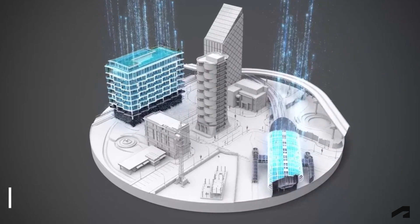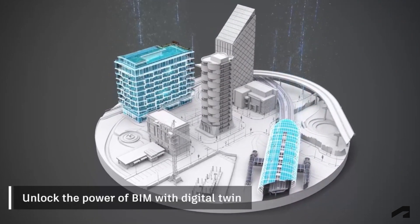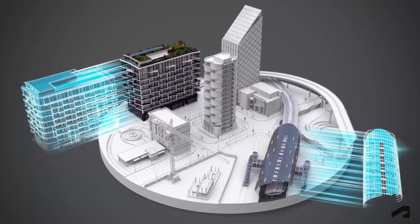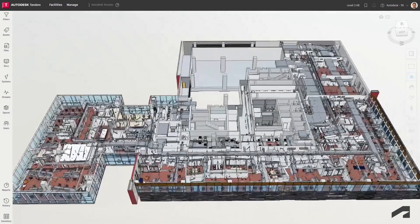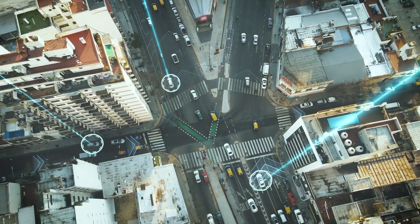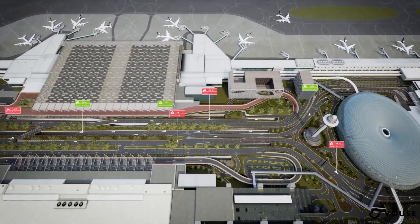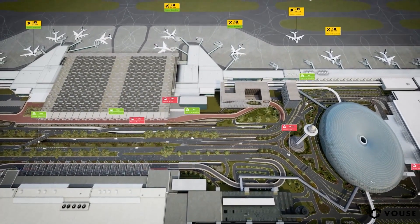They go beyond a simple 3D model, map or enticing puzzle heads. A digital twin, in simple terms, is a near real-time virtual representation of a real-world asset or system. Architects and designers can already build complex 3D models, but digital twins allow the ability to create simulations with near-live data feeds. Unlike a digital model, a digital twin remains dynamic.